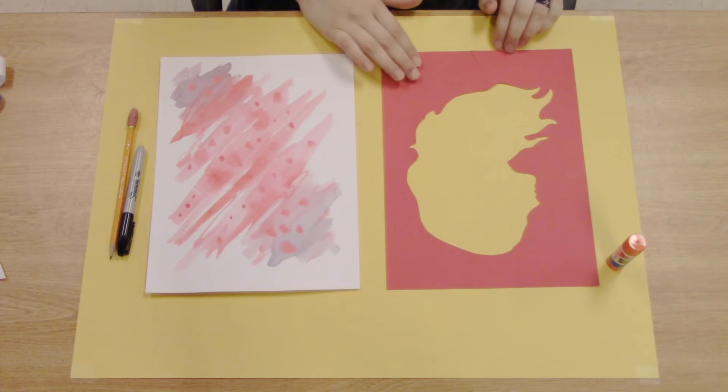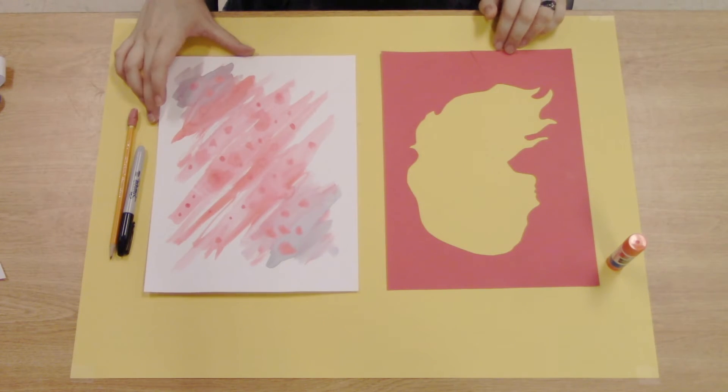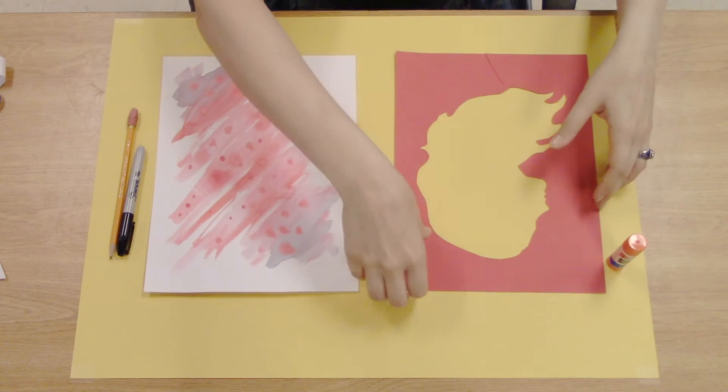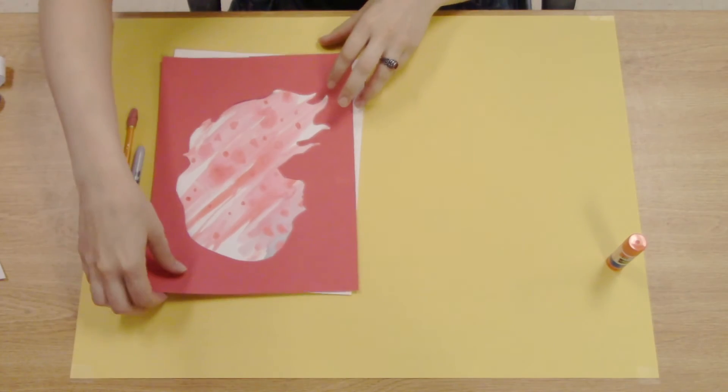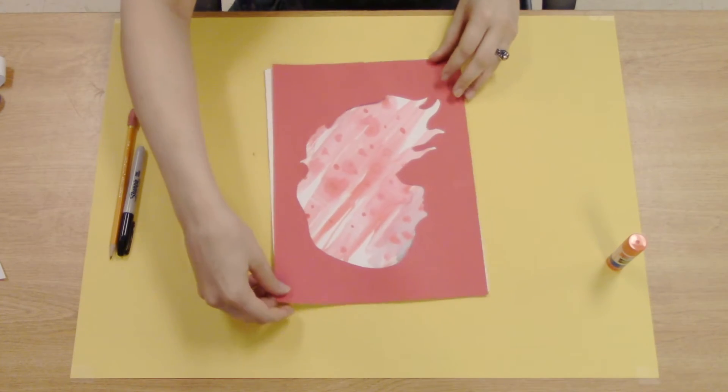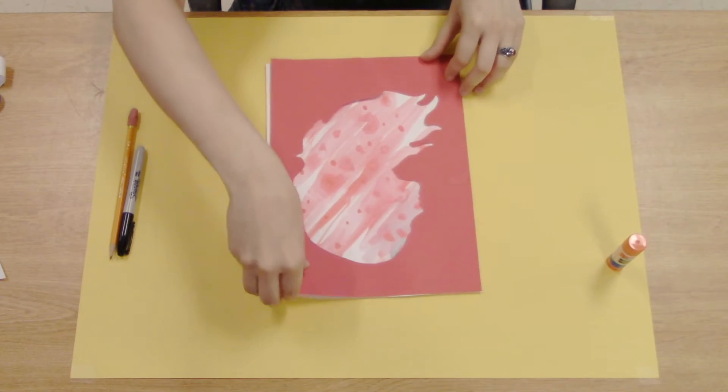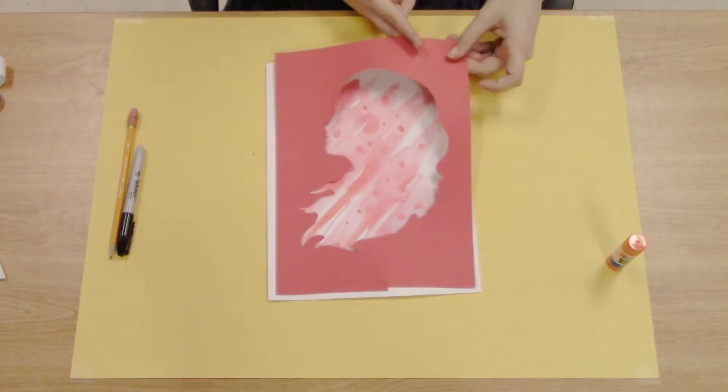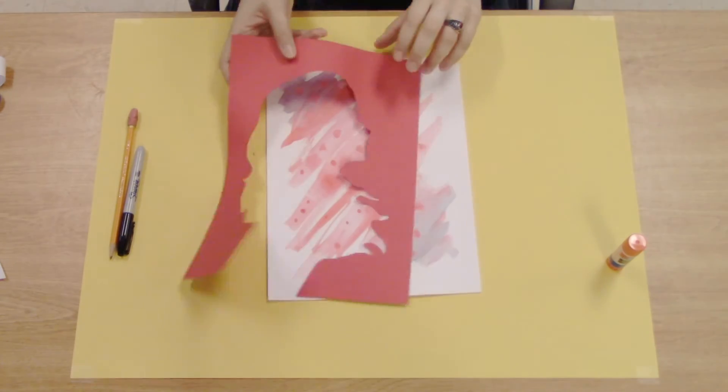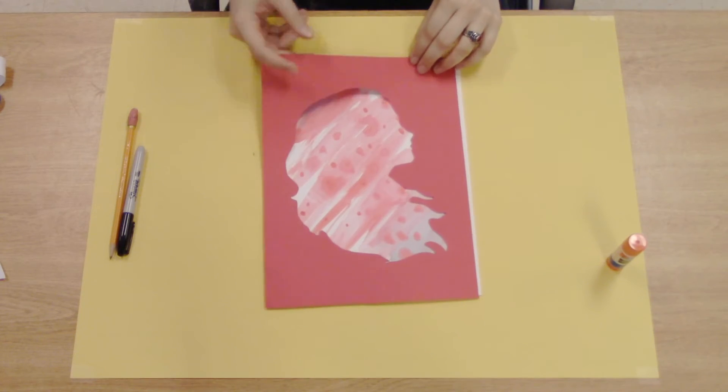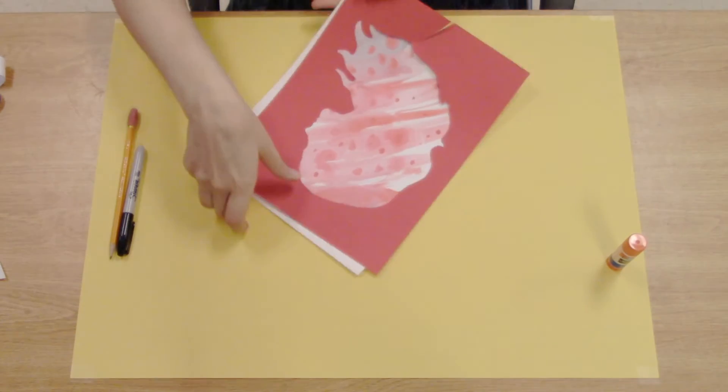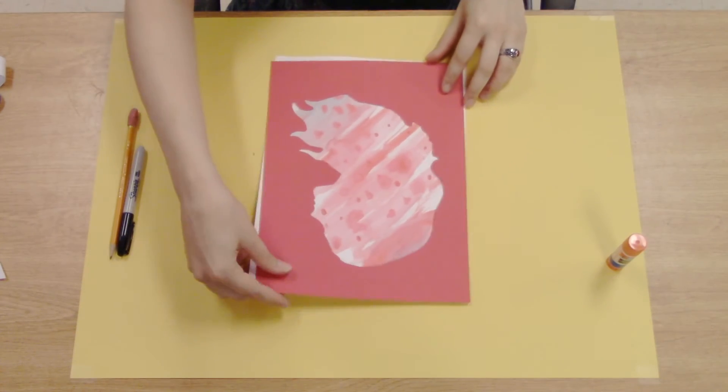Now that I've cut out my silhouette and given my watercolor some time to dry, I can lay the construction paper on top of the watercolor paper. You can shift around the image upside down or back to see which composition and which direction appeals to you more.